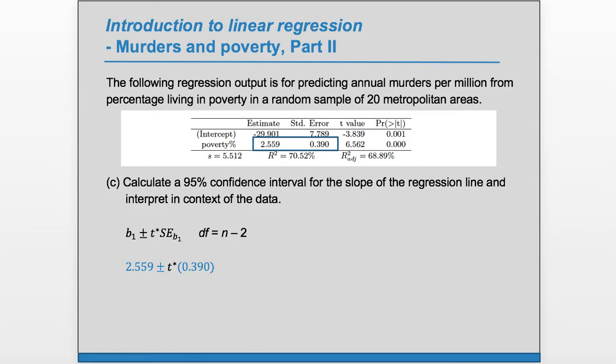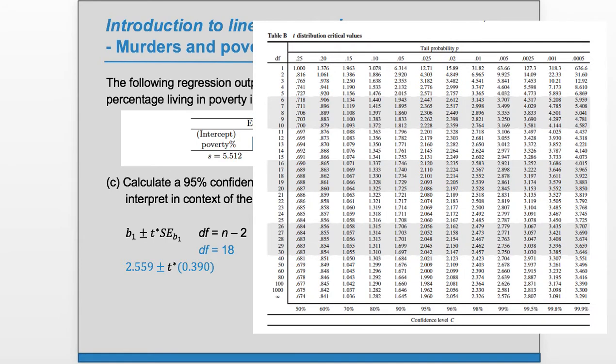Now we need t-star. We'll need to know the degrees of freedom - in this case, it's 18. We can grab a t table like this. We want 95% confidence and 18 degrees of freedom. We find those on the table and trace those to find a t-star of 2.101.